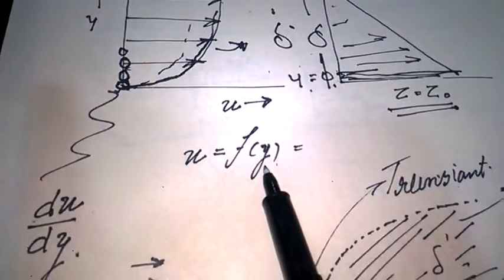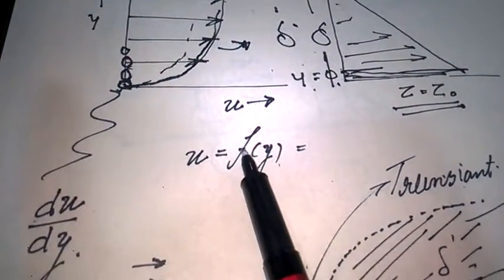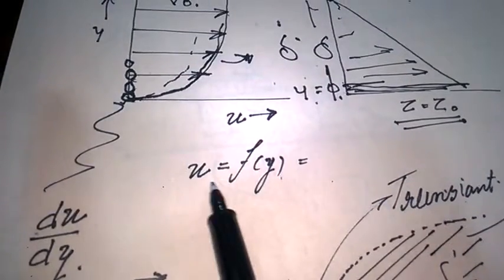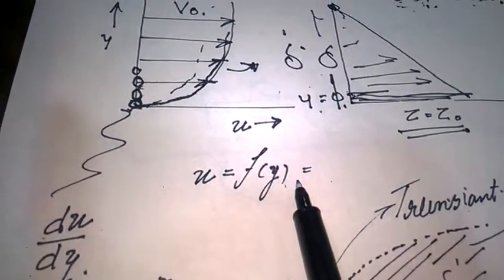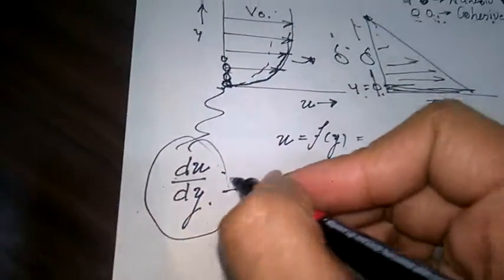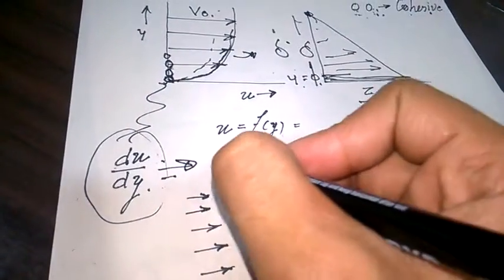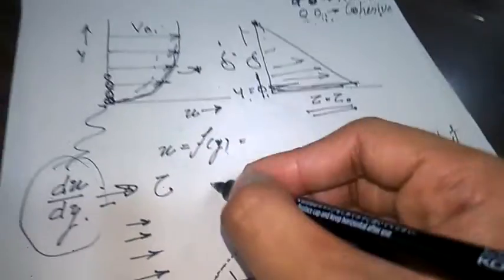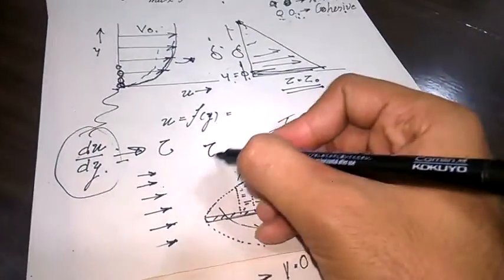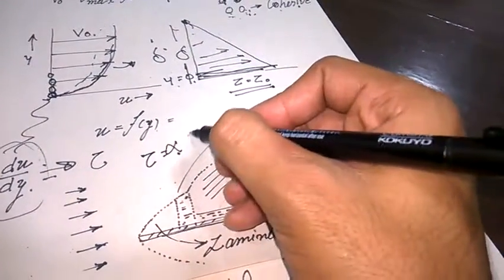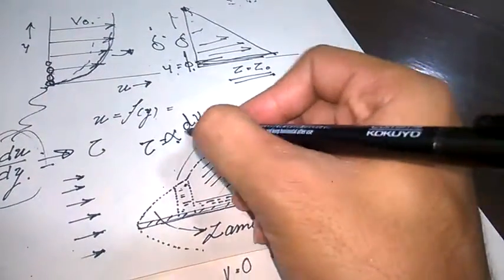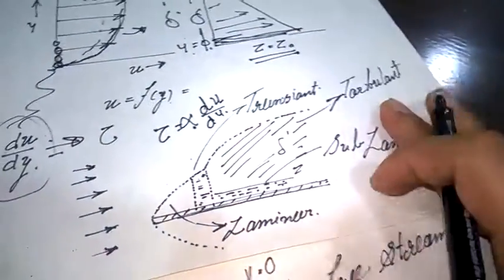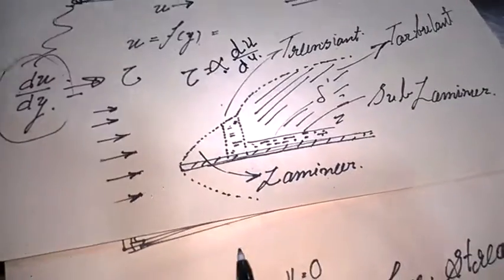So u = f(y) means the velocity is a function of y. The velocity gradient leads to the shear force. Newton's law of viscosity states: τ is directly proportional to the velocity gradient du/dy.